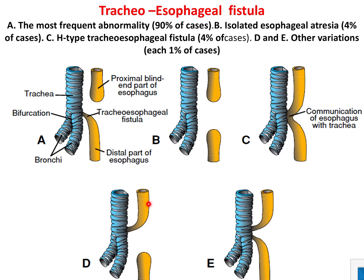In the fourth type, the upper part of the esophagus is communicating with the trachea forming the fistula, and the lower end of the esophagus is blind. In the fifth type, both the upper and lower parts of the esophagus are communicating with the trachea. The difference between type C and type E is that in type E they communicate with the trachea by separate openings — both open separately into the trachea.